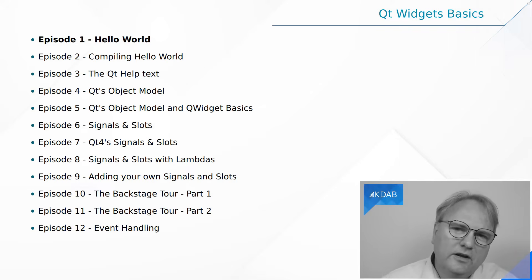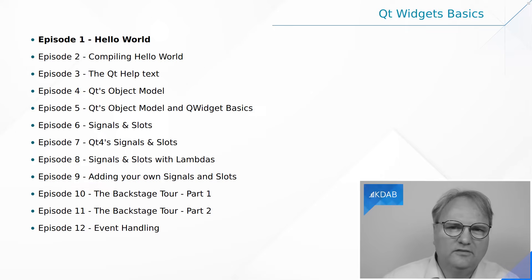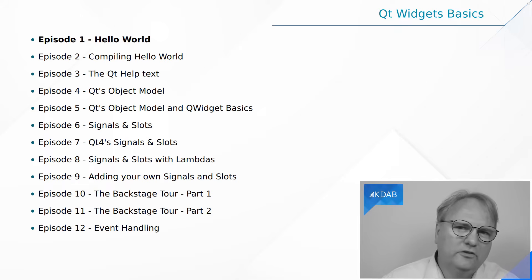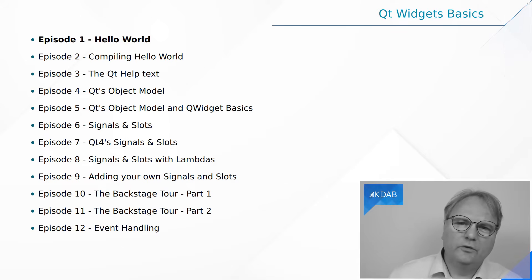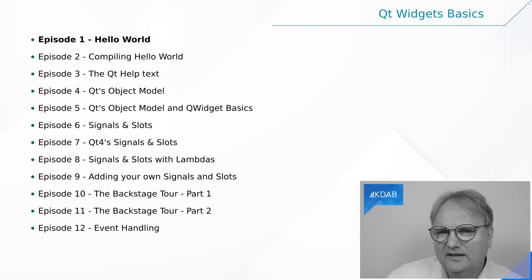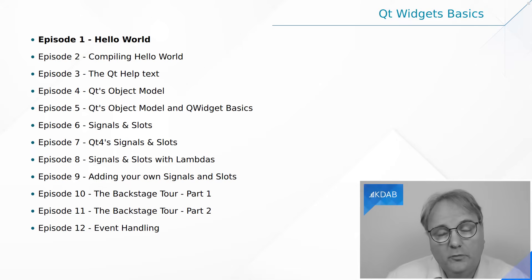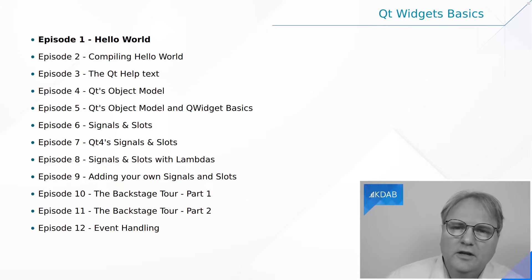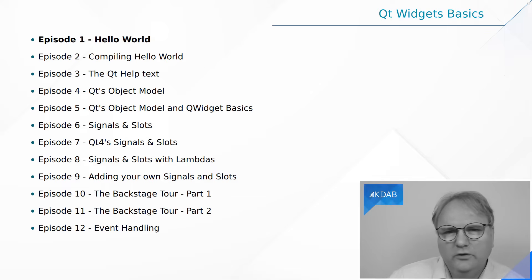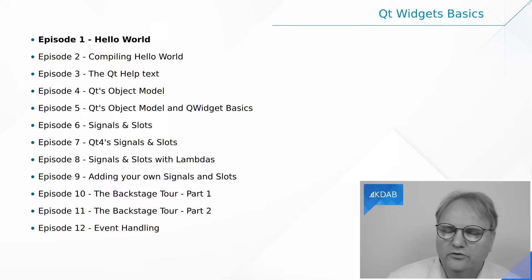The third episode will tell you about the help text available in Qt and how you navigate it. It's not that complex, but it's good to know the small details that will make you more productive. Then we'll turn our focus to the Qt object model, starting with ownership of objects. I know it's 2023, and we have C++11, but there is a bit of legacy in Qt Widgets that you still need to carry around — we do not use unique pointers. Instead, we have our own object model.